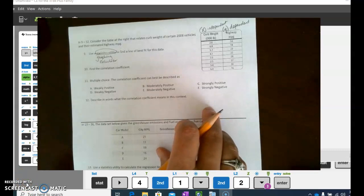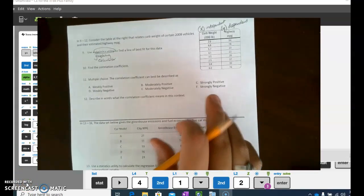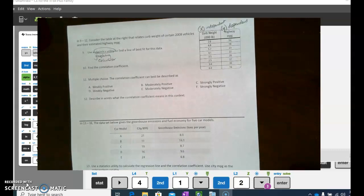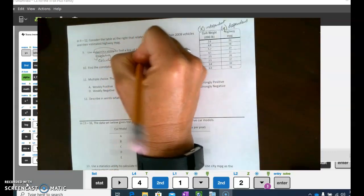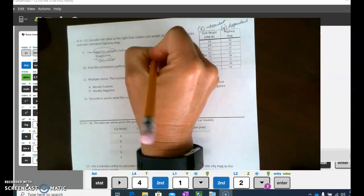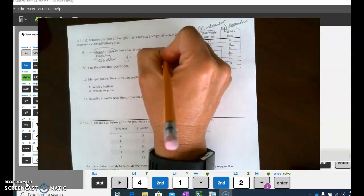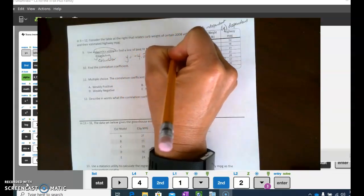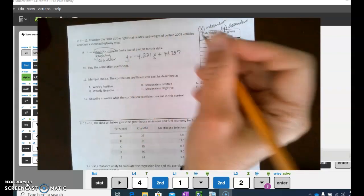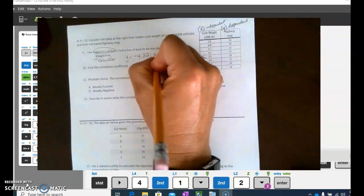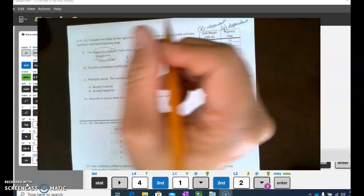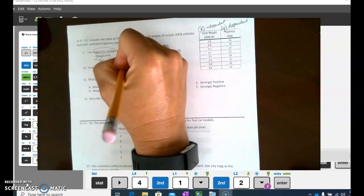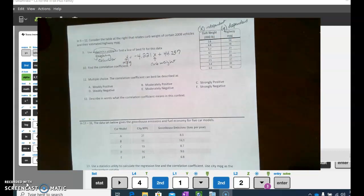Okay, so from my line of best fit, I'm going to go ahead and take it out three decimal places. The reason I'm doing that is the more decimal places I take it out, the more accurate my predictions will be. So I get Y equals negative 4.221X plus 44.257. I want to remind myself that X is curb weight and Y is highway miles per gallon.